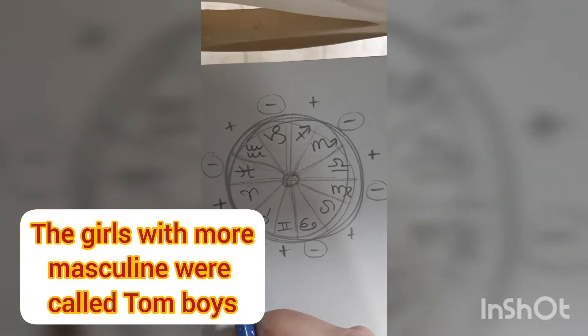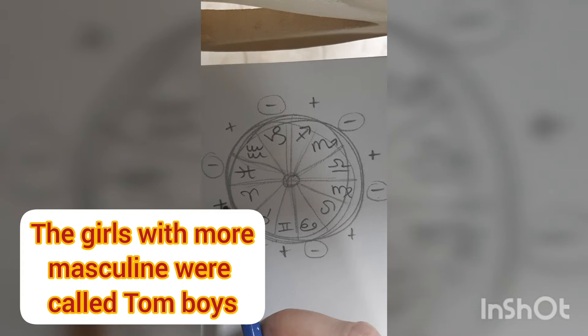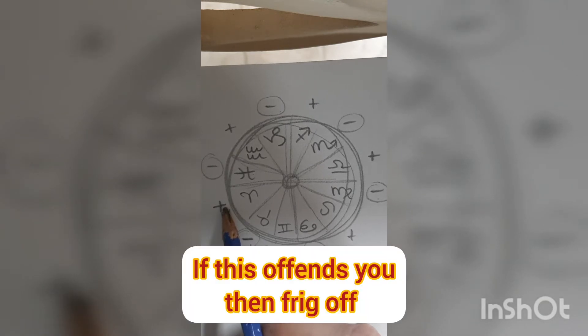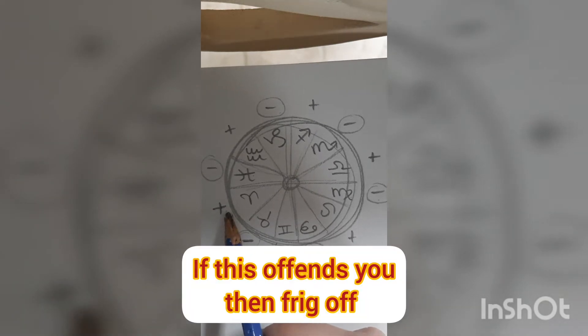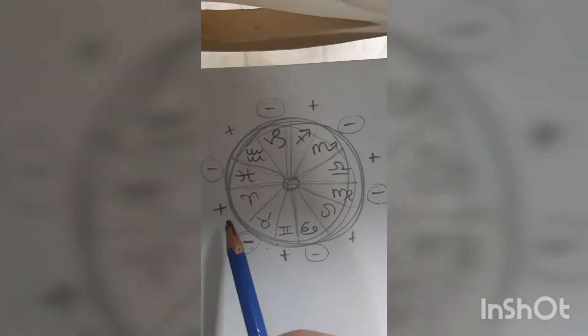Now when you meet a girl, like say you meet a little double Aries girl, well she's going to be masculine AF. This little girl is going to be running around with the boys banging her head and stuff, getting hurt all the time. That's also how this works.